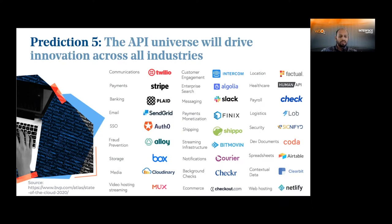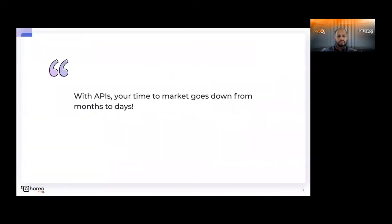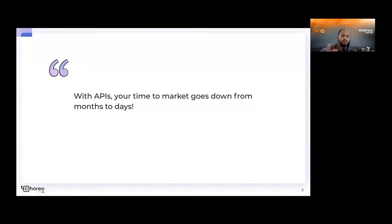What does this fundamentally enable? With APIs, the time to market for new businesses, and even for new initiatives of current mature businesses, goes down significantly. You can go to market very quickly because of all these utility APIs that you have out there in the market today.